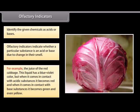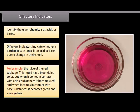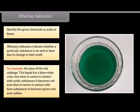For example, the juice of the red cabbage. This liquid has a blue-violet color, but when it comes in contact with acidic substances, it becomes red, and when it comes in contact with base substances, it becomes green and even yellow.